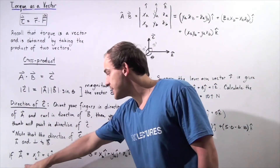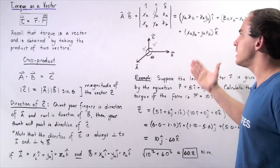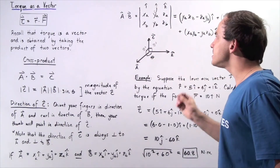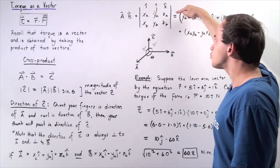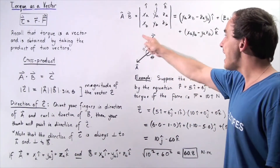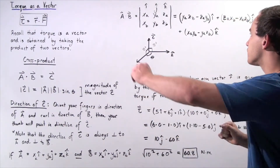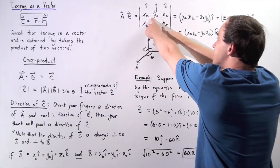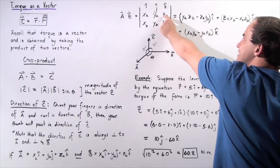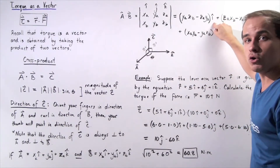To find vector C in component notation, we use the cross product method in which we essentially draw a matrix with two rows and three columns. Each column represents a component. The first row represents the X, Y, and Z components of vector A, and the second row represents the X, Y, and Z components of vector B. For the X component (î), we compute: Y_A times Z_B minus Z_A times Y_B.